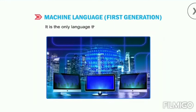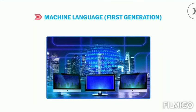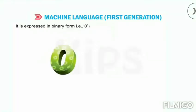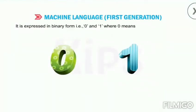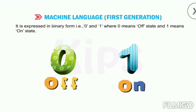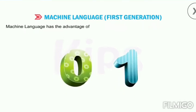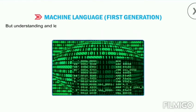Machine language, or first generation language, is the only language that a computer understands. It is expressed in binary form — that is, zero and one — where zero means off state and one means on state. Machine language has the advantage of very high speed and very low memory utilization.